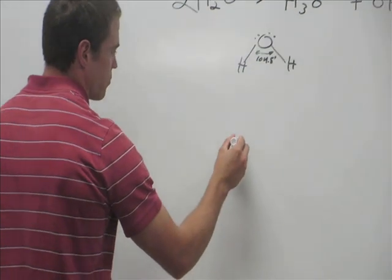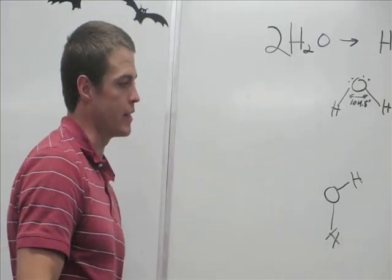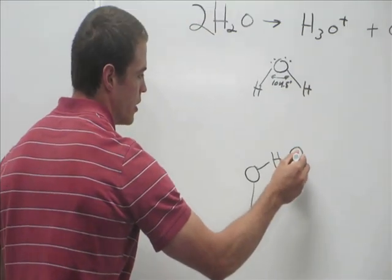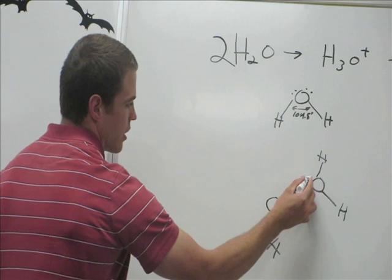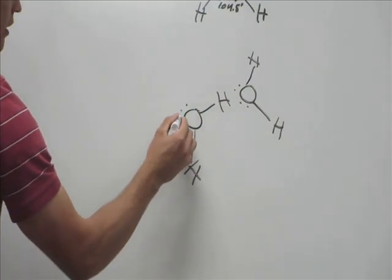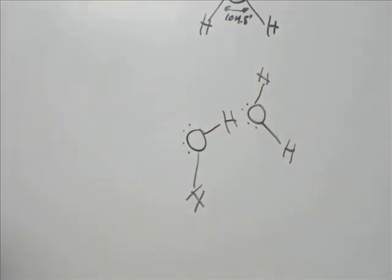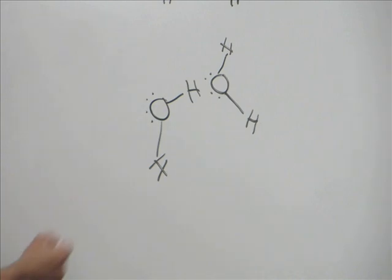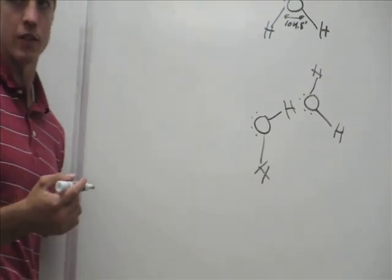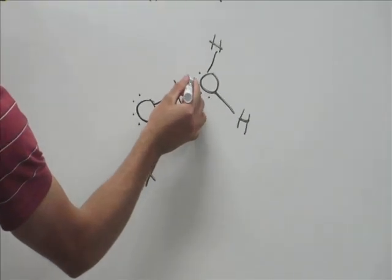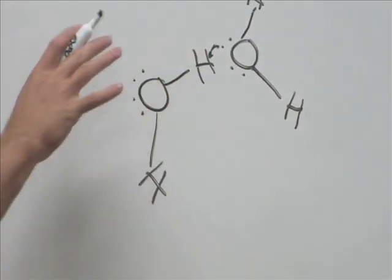Let's draw another water molecule. In our glass, this water molecule is surrounded by lots of other water molecules. Remember, there are lone pair electrons on the oxygen, which give it a partial negative charge. The hydrogens have a partial positive charge. Negatives and positives attract, so the electrons from one molecule pull on a neighboring hydrogen.